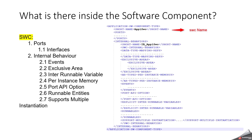In future videos, we can discuss more deeply about each topic. In the picture here, I have taken an example of application software component type. It has ports, internal behavior, data type mapping reference, exclusive areas — it can have multiple exclusive areas — typed per instance memory, events, port API option, inter-runnable variable, runnable, and support for multiple instantiation. When creating a software component, not all of these are mandatory. Internal behavior and ports are mandatory, but the rest — such as exclusive areas, per instance memory, and port API option — depend on your application and requirement.